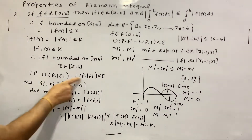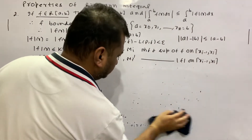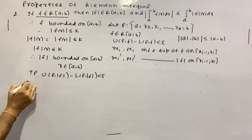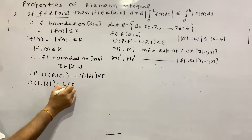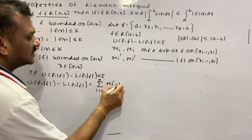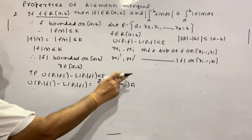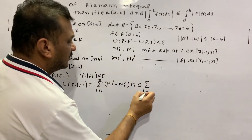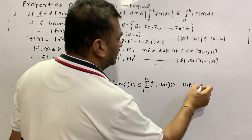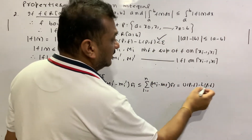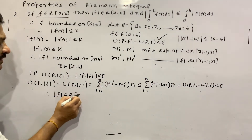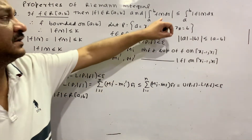Now I will do this proof. U(P, |F|) - L(P, |F|) equals the summation from i = 1 to n of (Mi' - mi') · Δxᵢ, which is less than or equal to the summation of (Mi - mi) · Δxᵢ, which equals U(P, F) - L(P, F), and this is less than epsilon. So |F| is Riemann integrable on closed interval [A, B].